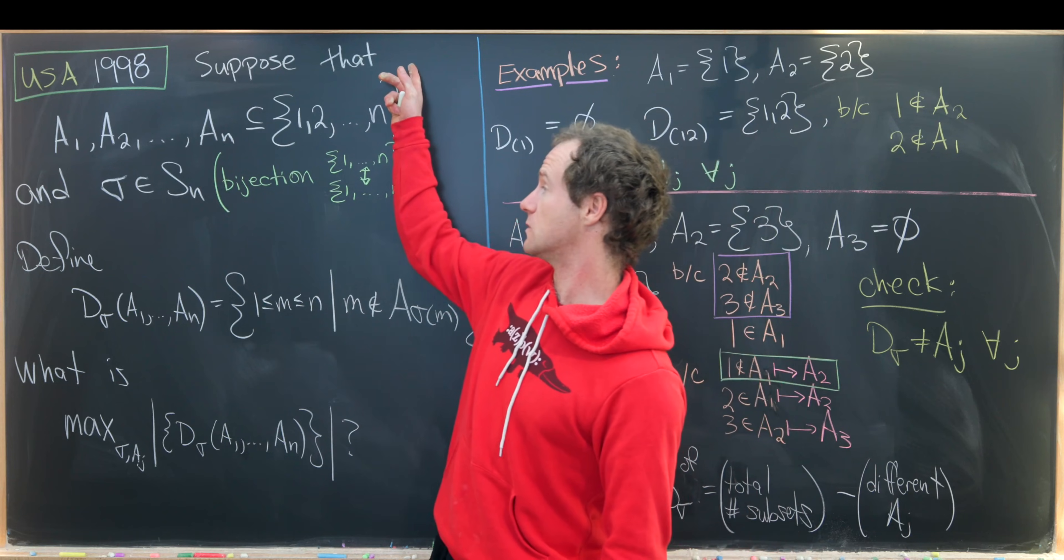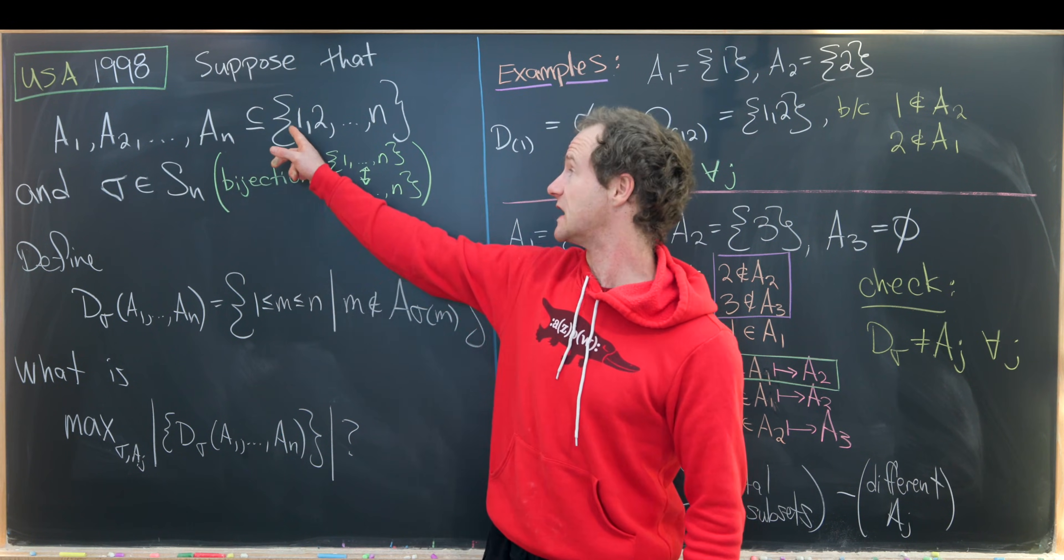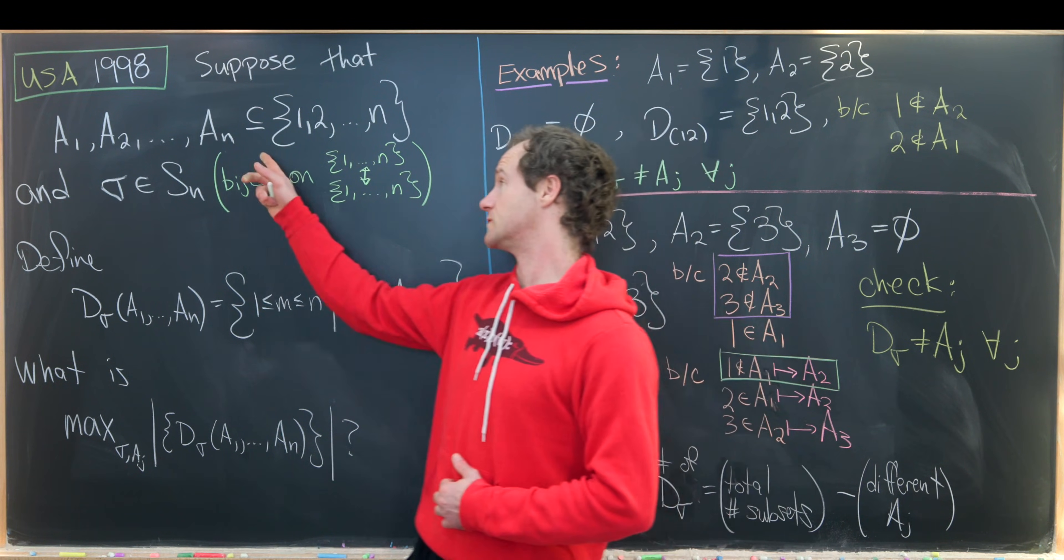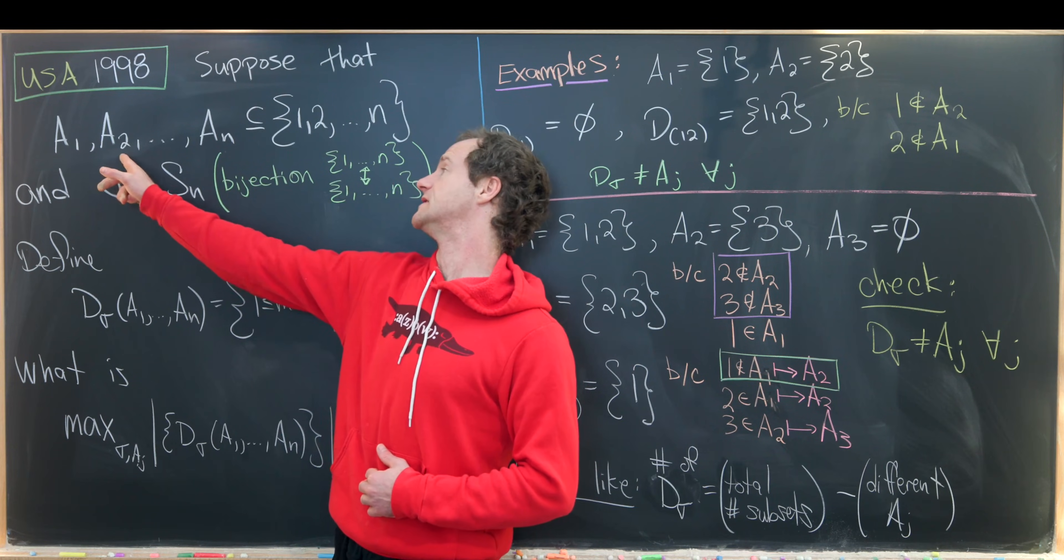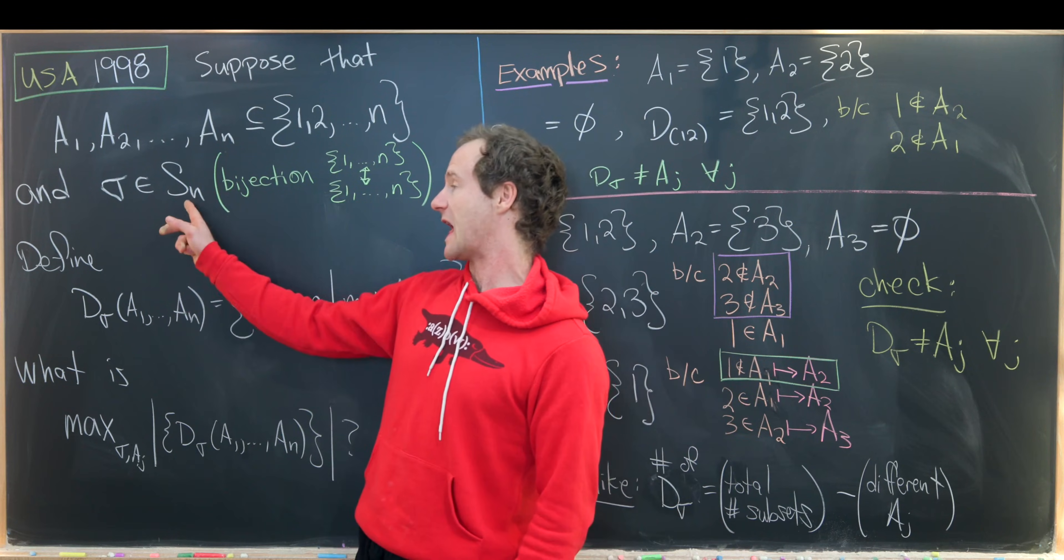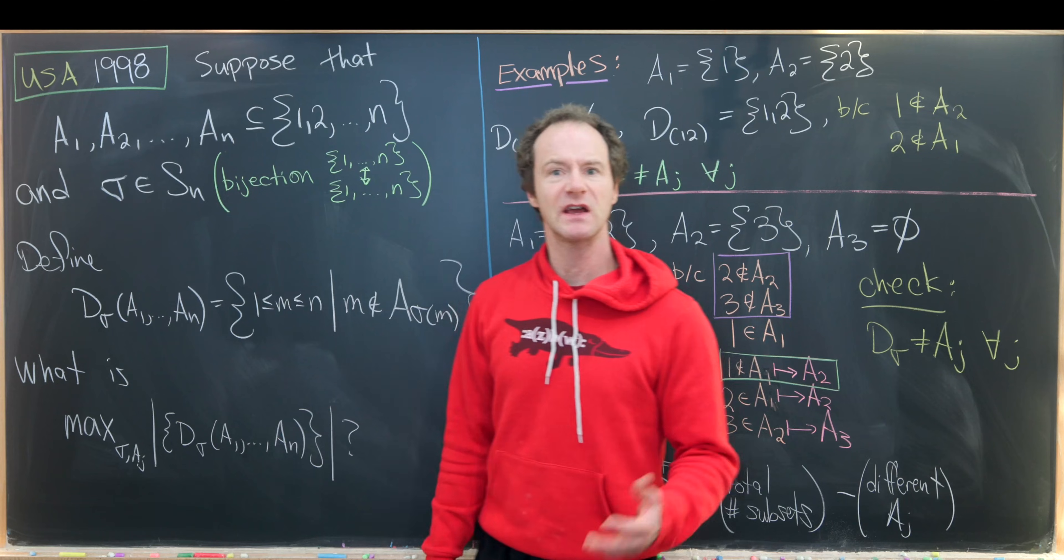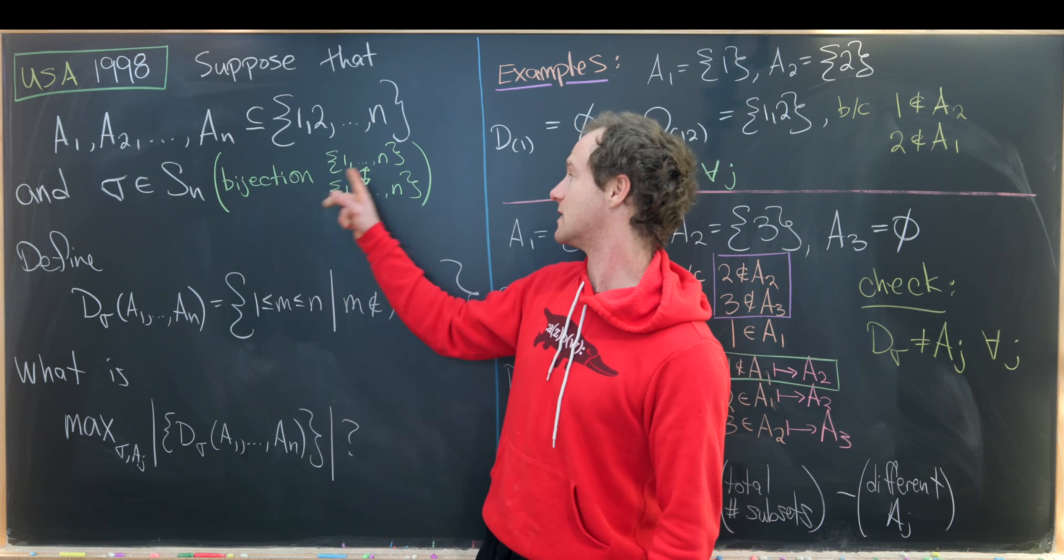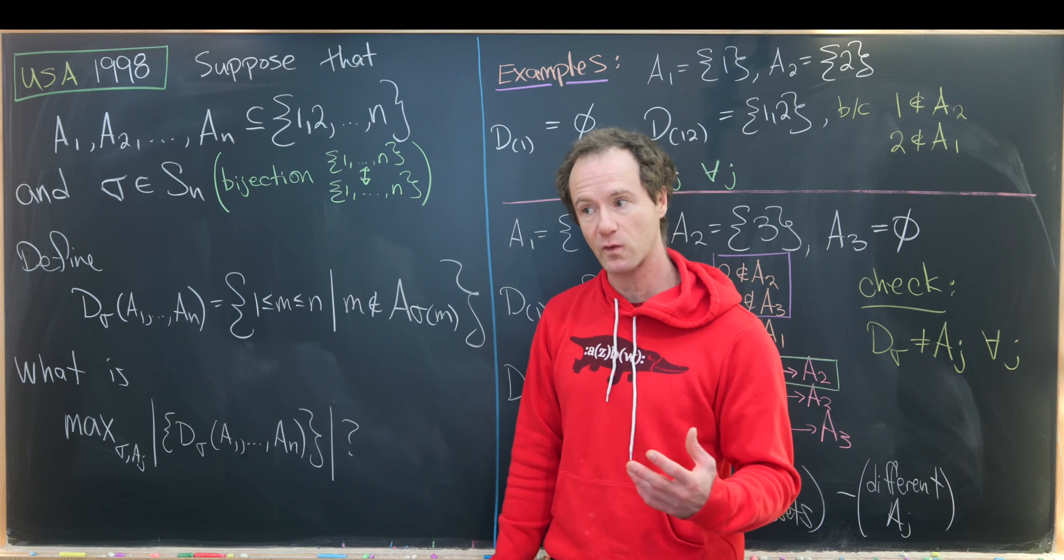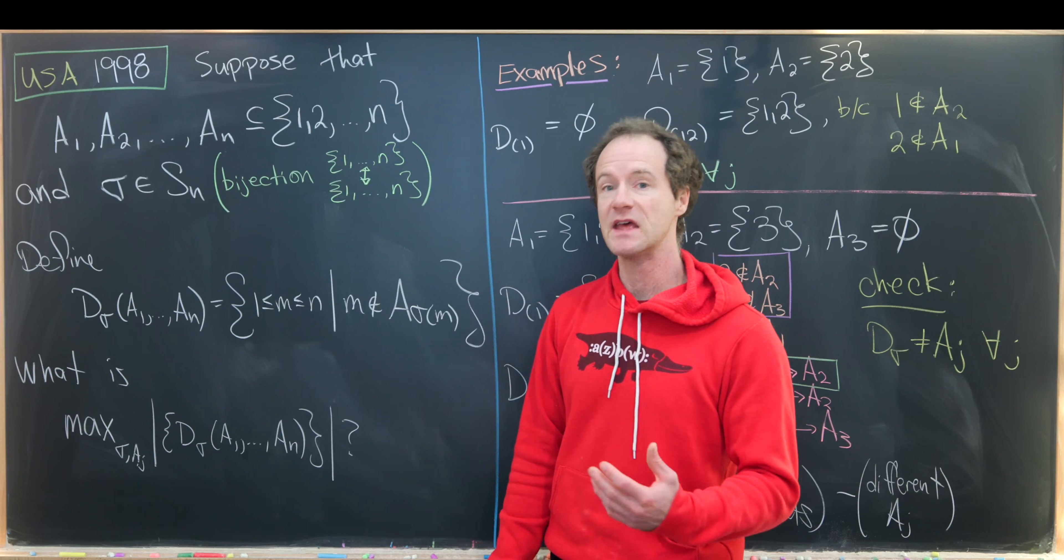We want to suppose that we have n subsets of the set containing 1, 2, 3, all the way up to n. And we'll name those subsets a sub 1, a sub 2, all the way up to a sub n. Furthermore, we have an element of the symmetric group Sn which we'll call sigma. Let's just recall that that's just a bijection from the set containing 1 to n to the set containing 1 to n. In other words, a 1 to 1 and onto function.